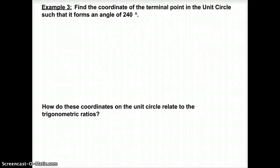Give this a try and then check the answer on the PDF that's attached. And one last example. Find the coordinates of the terminal point in the unit circle such that it forms an angle of 240. What does this mean?